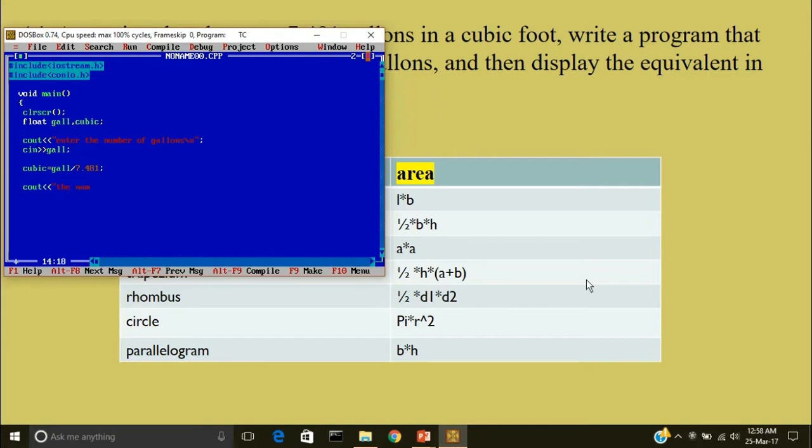Cout the number of cubic foot occupied by less than less than gal is less than less than cubic. So in this statement the compiler will display the cubic foot occupied by and whatever there is in the memory location gal. Then it will display is and finally the answer. I'll write getch. I'll close the program.